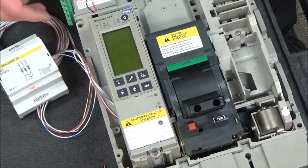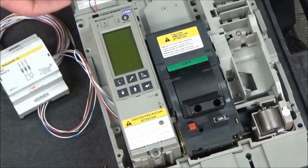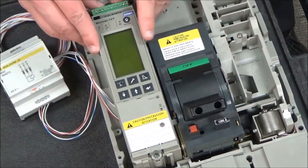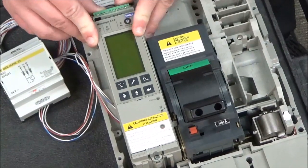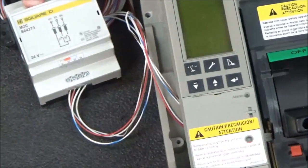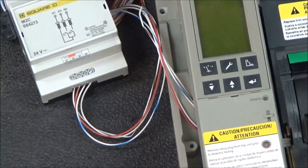Once you have the trip unit screws tightened, you will then put the green 12 pin connector back in. And you now have your M2C or M6C programmable contact module installed in the breaker.